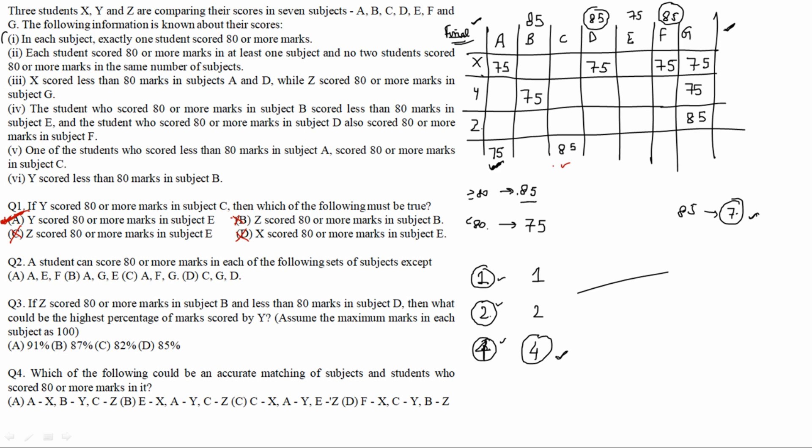Second question: which of the following sets of subjects can a student score 80 or more in — except one set. There is no extra condition given for this question, so we use the base table directly. We will check each option A, B, C, D in turn: if a set is possible, it is a valid answer candidate; if not possible, it is the exception.